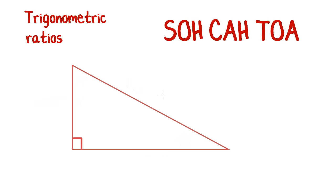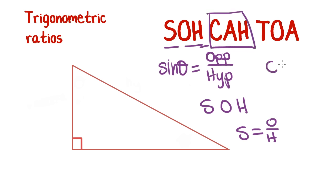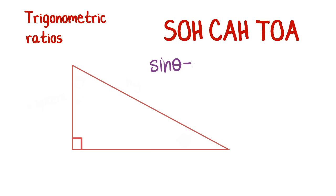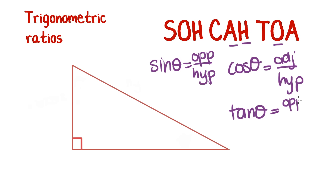Now how do we apply these ratios? The mnemonic we use is SOHCAHTOA. SOH: sine of theta equals opposite over hypotenuse. CAH: cosine equals adjacent over hypotenuse. TOA: tangent equals opposite over adjacent. So sine of theta is opposite over hypotenuse, cosine of theta is adjacent over hypotenuse, and tangent of theta is opposite over adjacent.